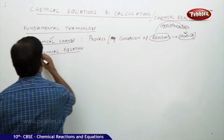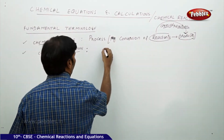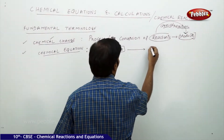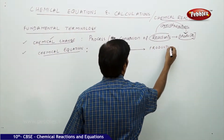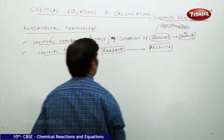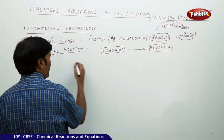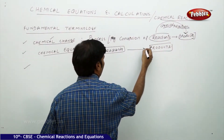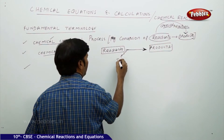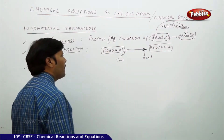When you say chemical equation, a chemical equation is made up of reactants and products separated by an arrow. The arrow has a tail and a head — the head is faced by products and the tail is faced by reactants.